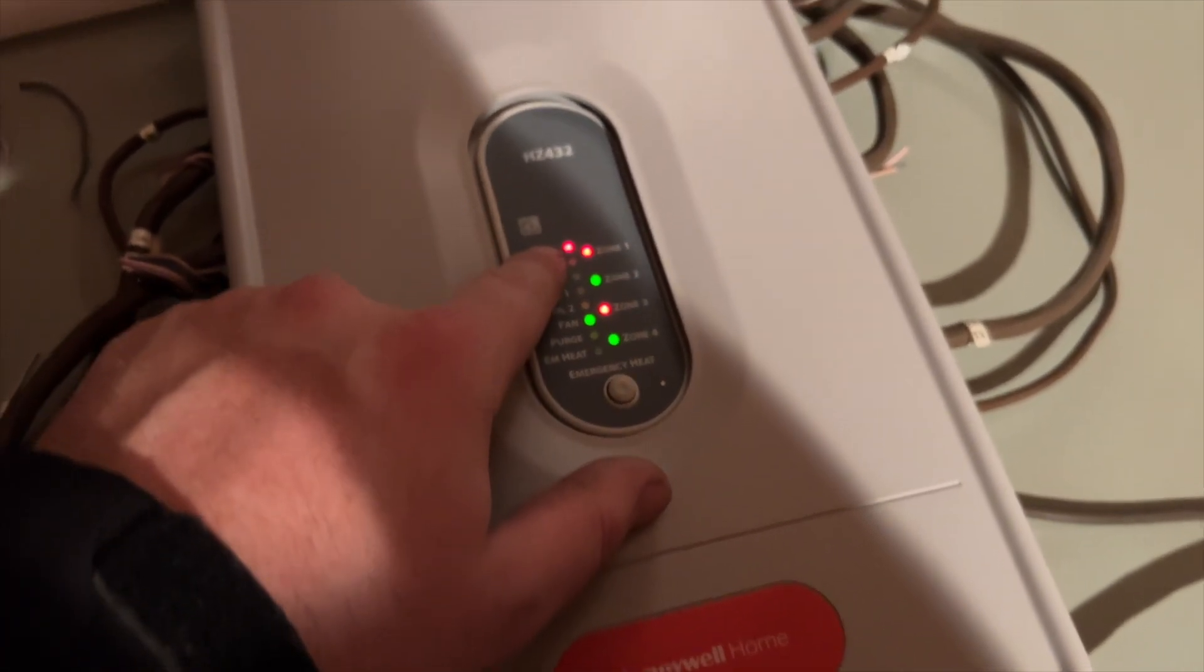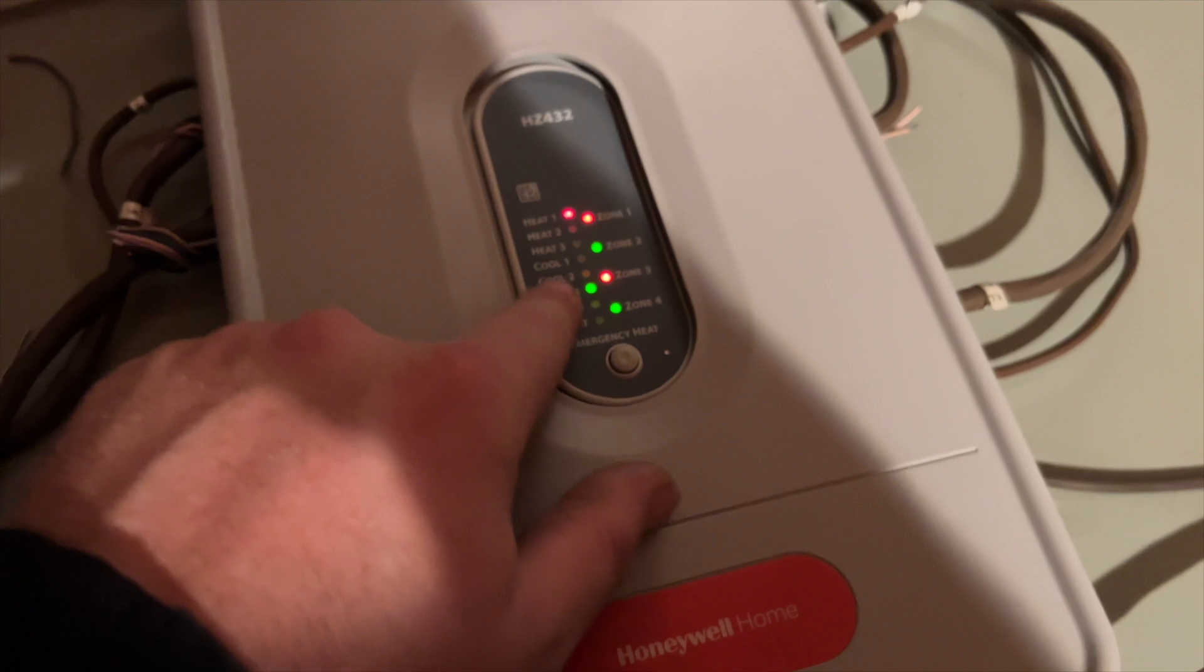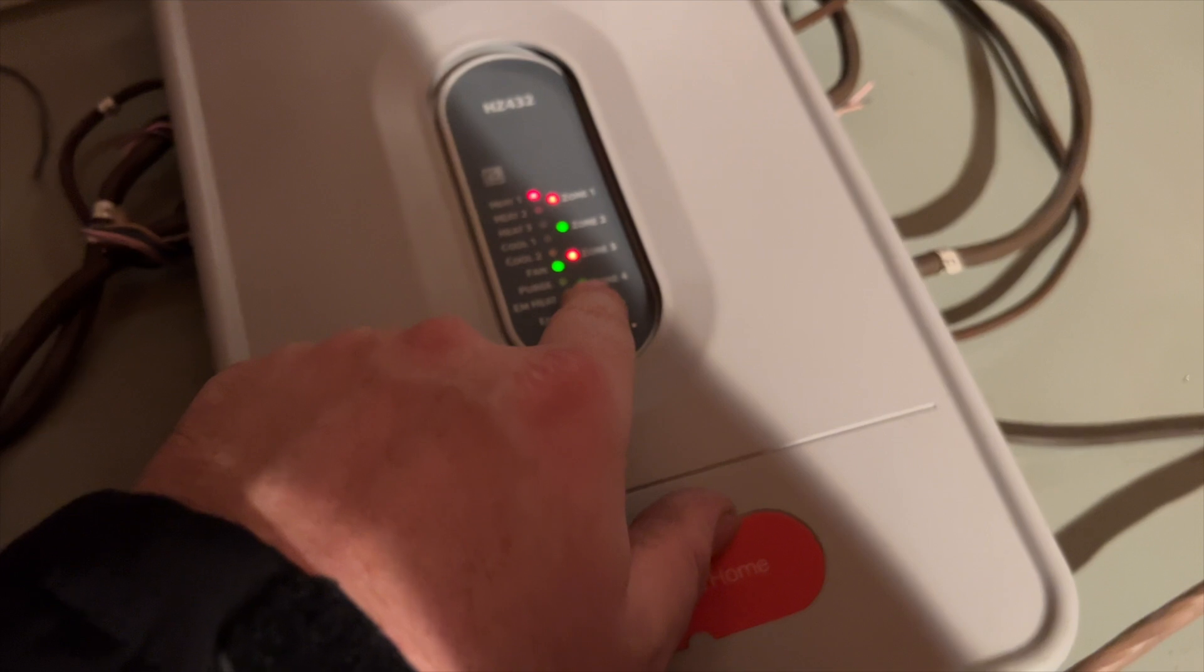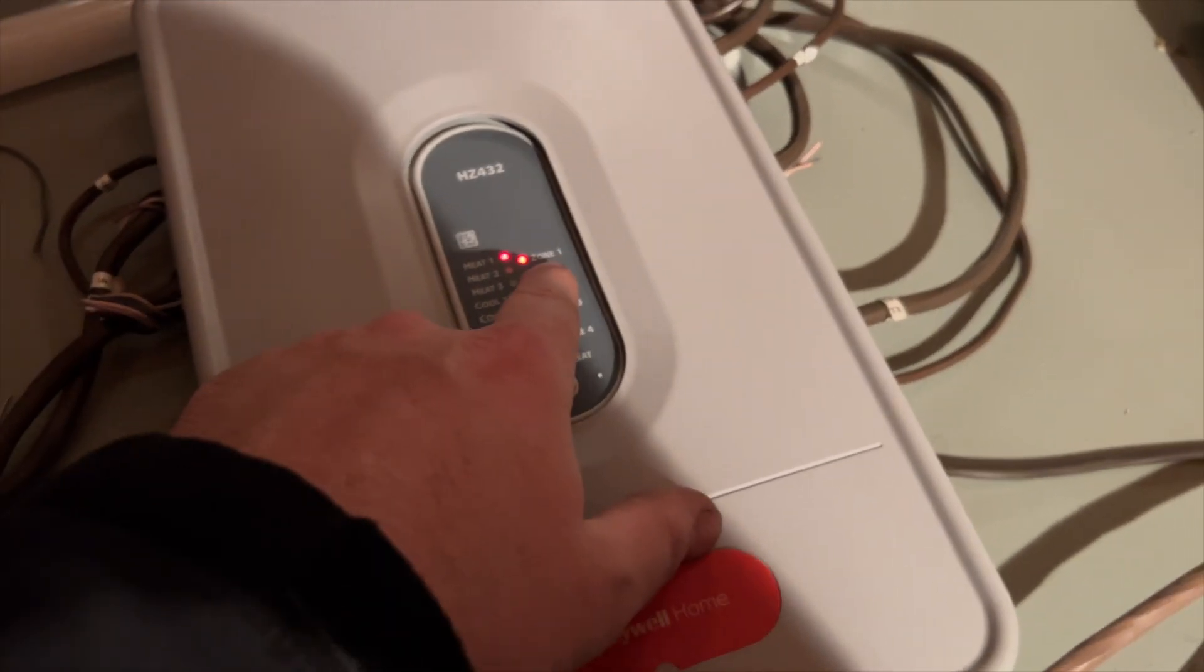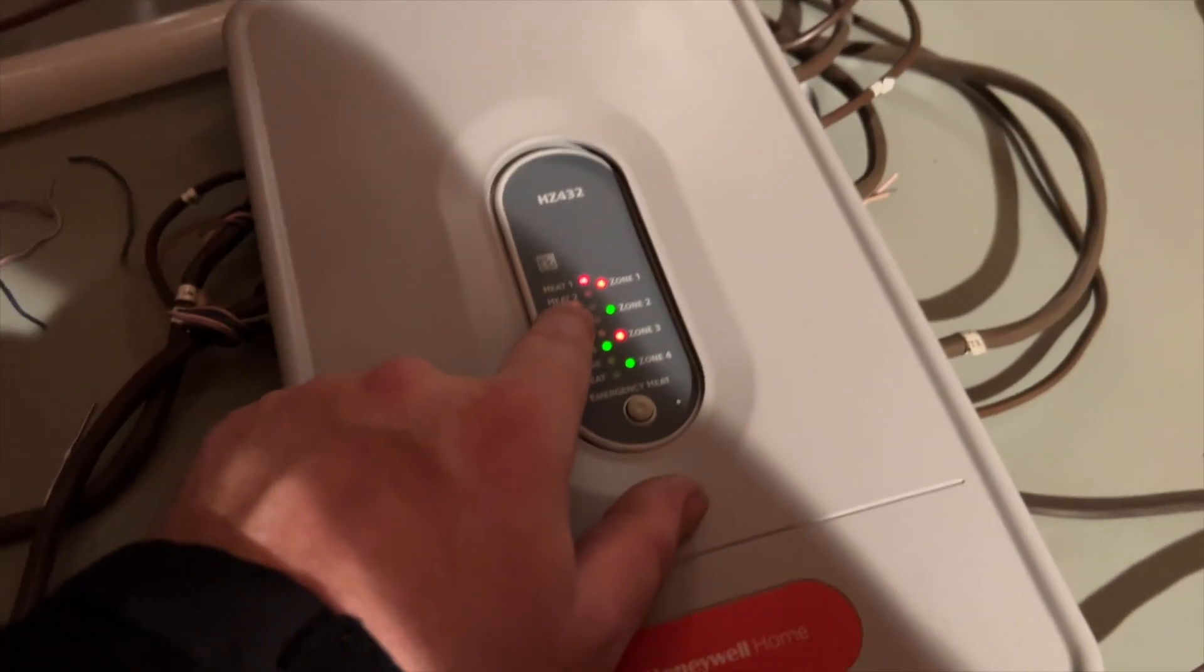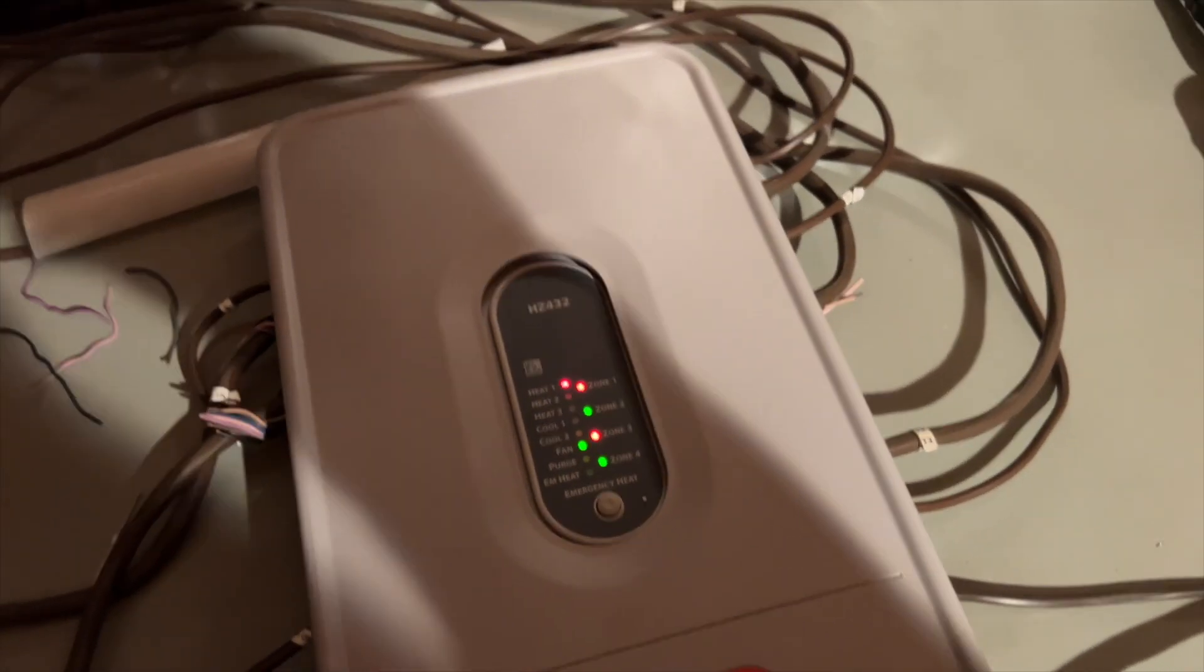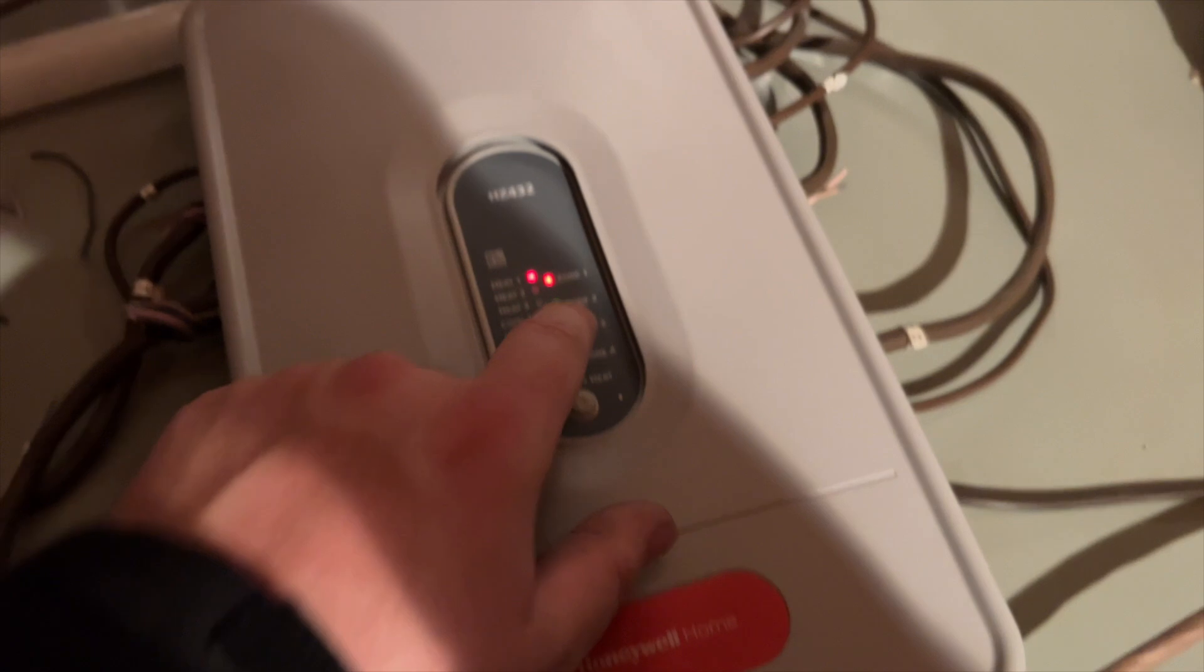So red means it's heating. Anything red means it's on. Or I'm sorry, red is for heating. For the zones, if it's green that means it's open. If it's red, that means it is closed. If it is closed, it's sending 24 volts to the zone damper. If it's open, there's no power because it's spring open.